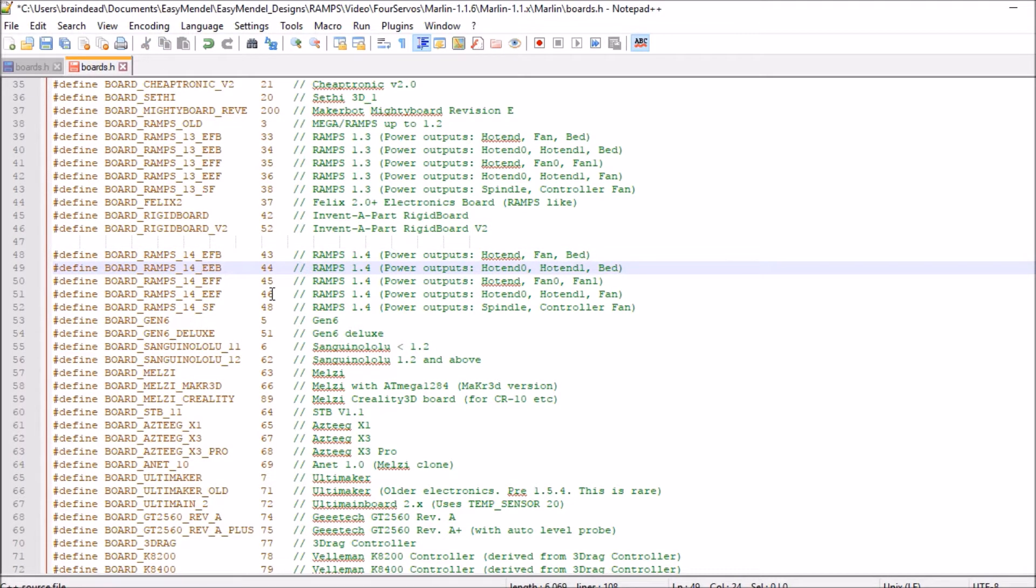The next one is extruder 0 or hotend, then we have extruder 1 or hotend 1 and then a bed. Then we have an extruder, fan 0, and fan 1.